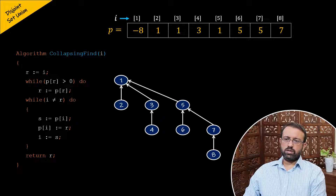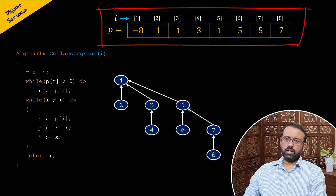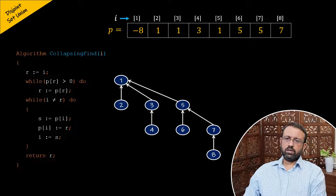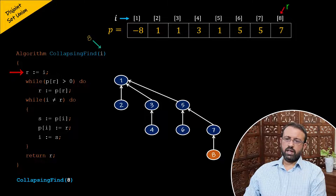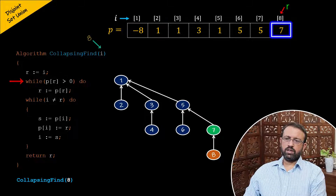Let us trace through the collapsing find algorithm with eight elements. We call the algorithm with i equal to eight. The first statement assigns i to r, so r becomes eight. The while loop checks p of r greater than zero — p of 8 is 7, which is greater than zero, so the loop executes and r becomes 7.